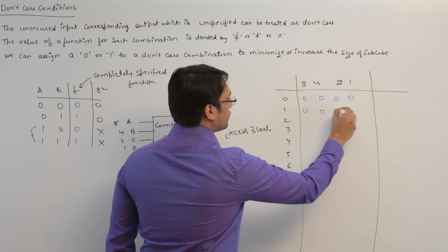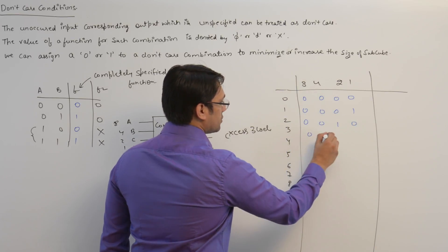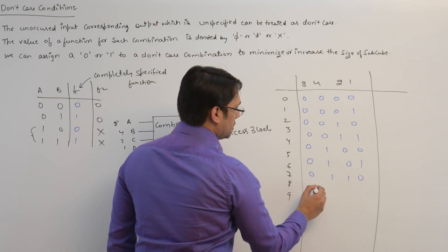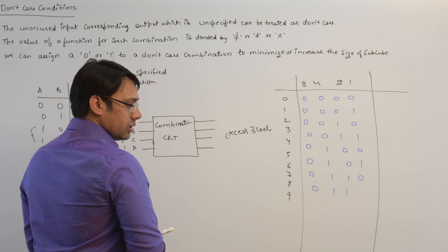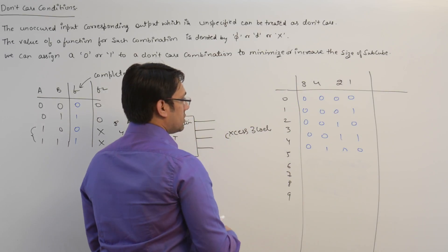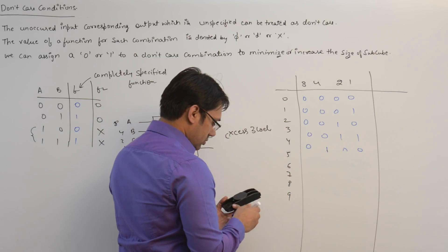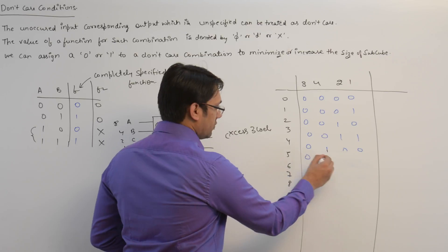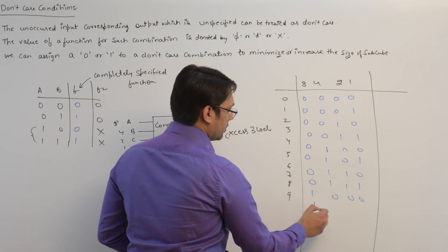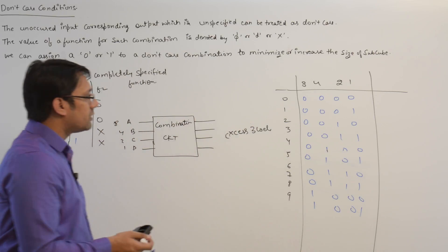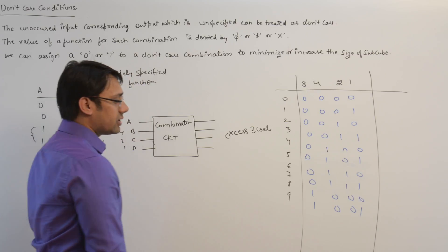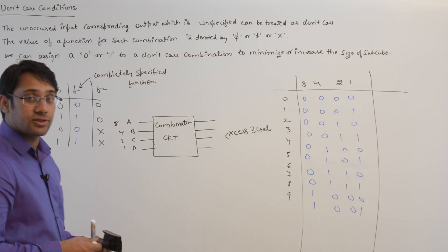For 8421 code, digit 0 is represented as 0000, digit 1 as 0001, digit 2 as 0010, digit 3 as 0011, and so on up to digit 9. With 4 bits there are a total of 16 possible combinations.